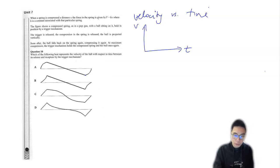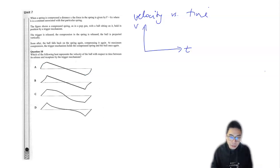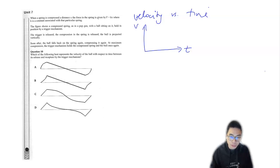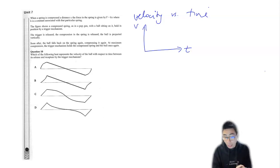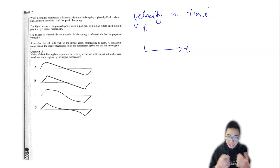I'm going to go to the question stimulus. When a spring is compressed a distance X, the force in the spring is given by F = KX, where K is a constant associated with that particular spring. The figure shows a compressed spring as in a pop gun with a ball sitting on it held in position by a trigger mechanism. The trigger is released, the compression in the spring is released, and the ball is projected vertically.